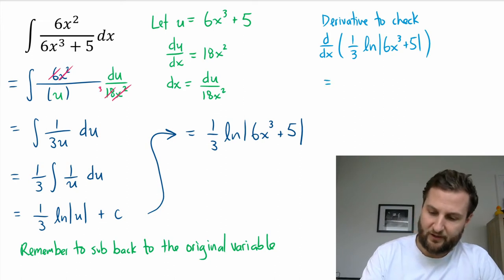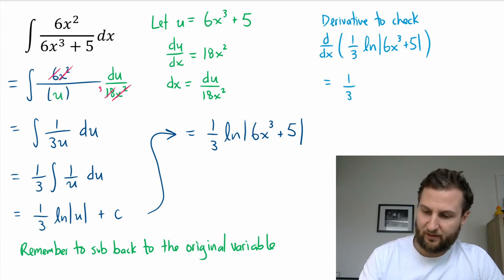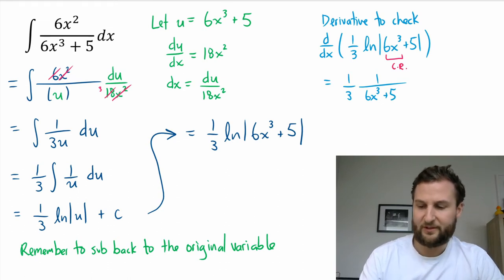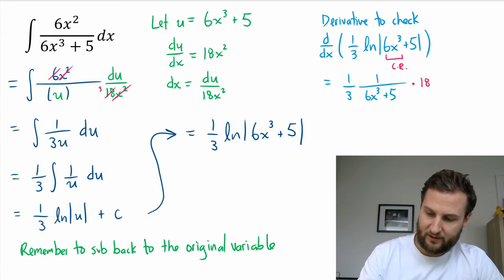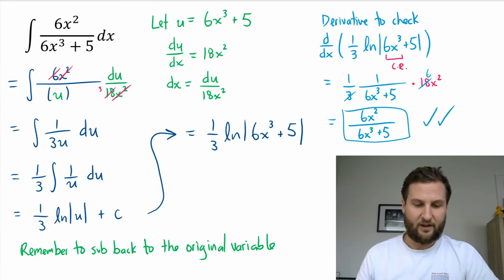The derivative here is going to be, well, the 1/3 is a constant so that stays. The ln part is going to be 1 divided by that whole thing, and then I have a chain rule. The derivative is 18x², so that's times 18x². When I simplify this all out, I get 18 divided by 3 is 6 on the top, so I get 6x² over 6x³ + 5. Everything looks good.